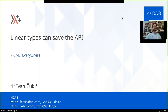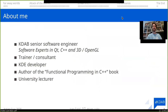Hi everybody, my name is Ivan Trukic and I'll be talking about C++ and how linear types can save the API in C++. Just a short intro about me: I'm a KDAB Senior Software Engineer. I've been a KDE developer for more than a decade and I wrote a book on Functional Programming in C++.